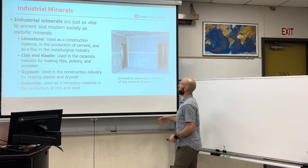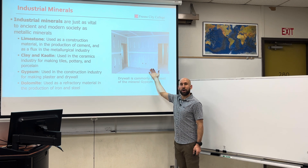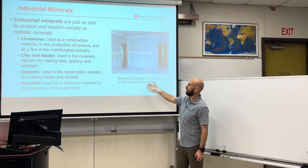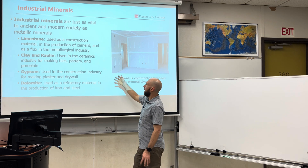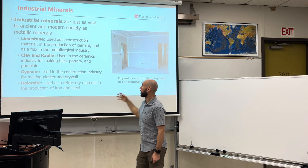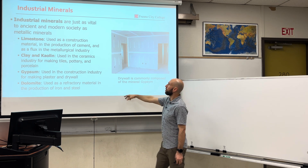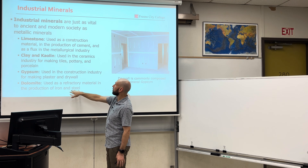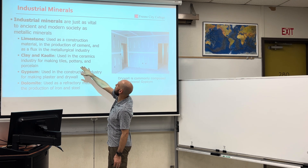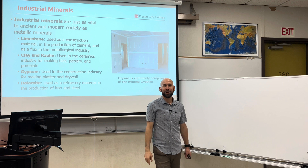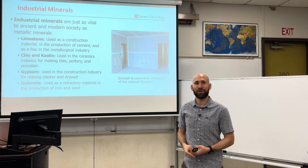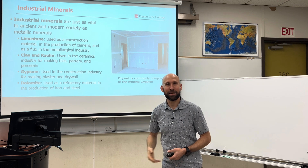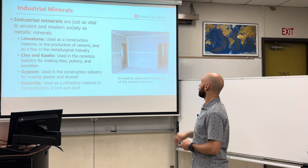Industrial minerals: the drywall in your home is made of the mineral gypsum. Gypsum is a common construction material for drywall and for plaster. We've got clay, kaolin, and ceramics. Dolomite is used in the production of iron and steel. Limestone in the production of cement. All of these raw materials of the earth go into industrial applications for various industrial processes.